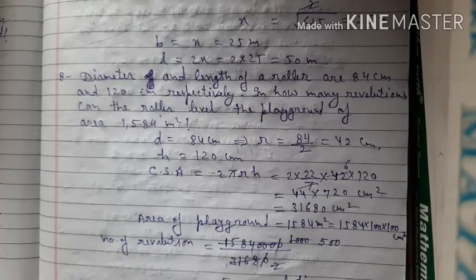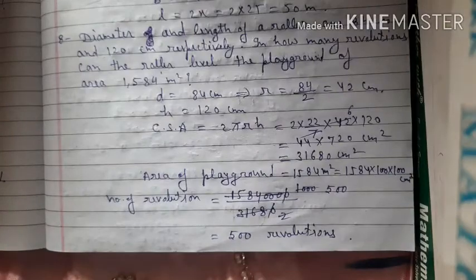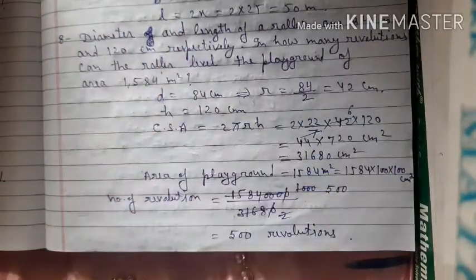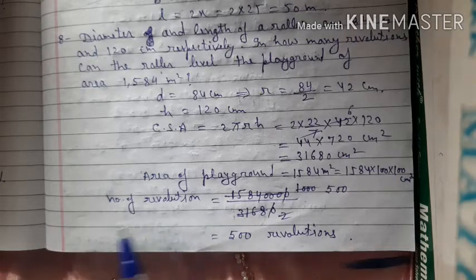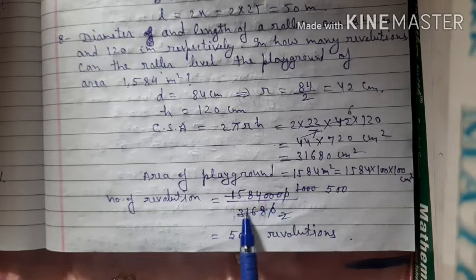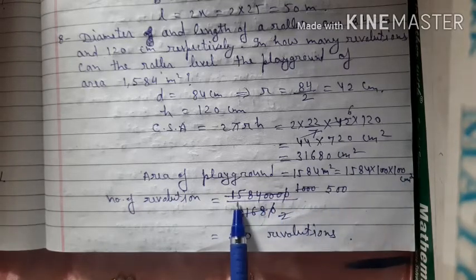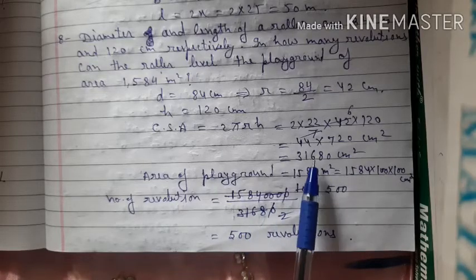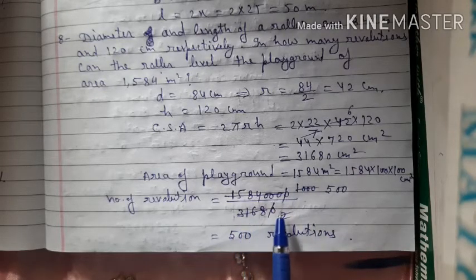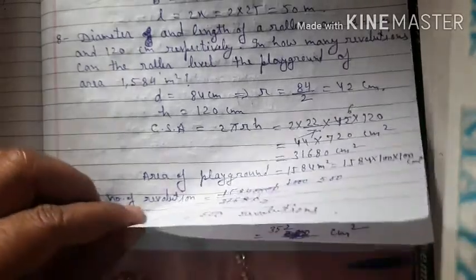Now we need to level the area of the playground using the roller's curved surface area. Number of revolutions = area of playground ÷ curved surface area of roller. Area of playground = 1584 m² = 1584 × 100 × 100 cm². Dividing by 31,680 gives 500 revolutions. The roller will cover the entire playground in 500 revolutions.